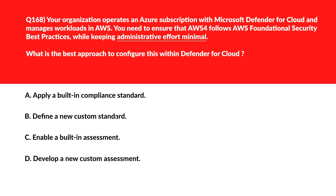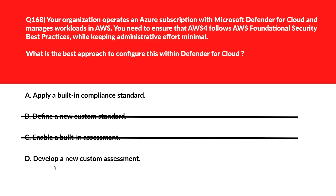Creating a custom standard requires manual configuration, increasing administrative effort — incorrect. Option C, enabling a built-in assessment, evaluates security risk but does not enforce compliance standards for AWS — incorrect. Option D, developing a new custom assessment, requires additional manual effort, contradicting the goal of minimizing administrative effort.